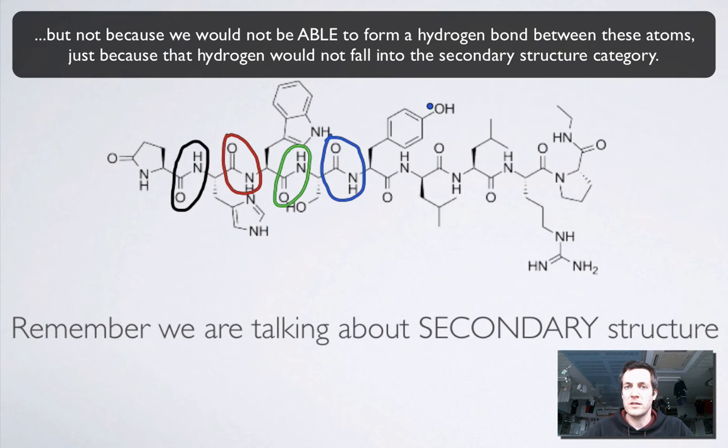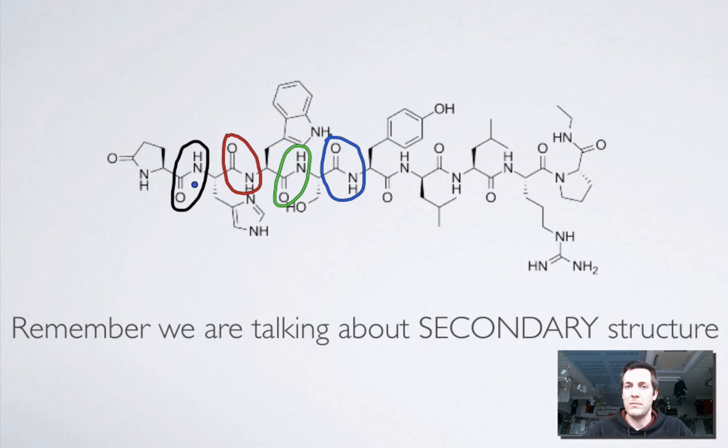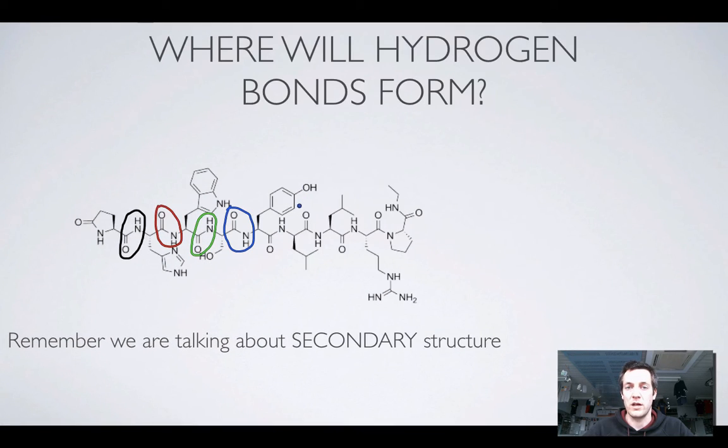Because at the moment we're talking about secondary structure, and so the hydrogen bonds have to be between one amide group and another. Not between one amide group and maybe something on the side chain of an amino acid further on down the chain. That will be tertiary structure and we'll look at that in the next film.